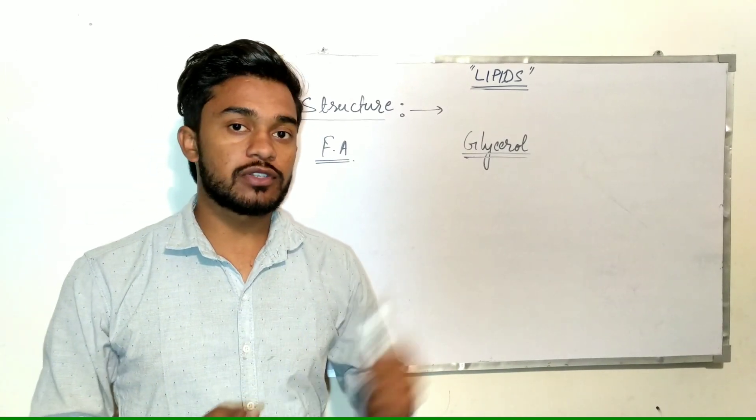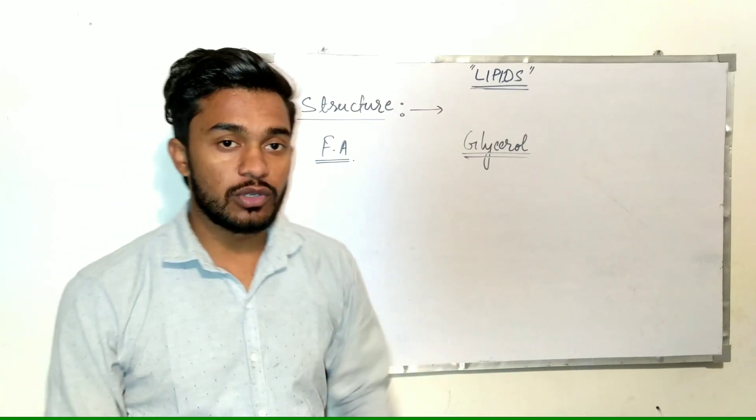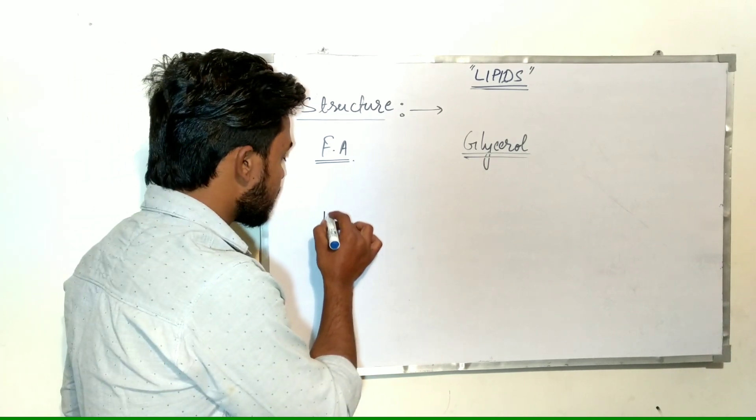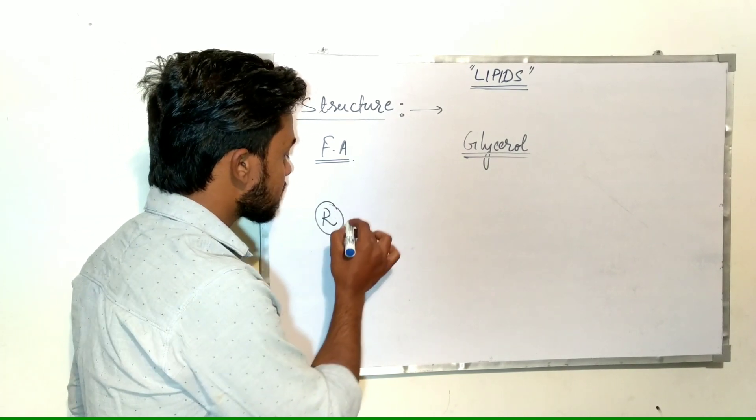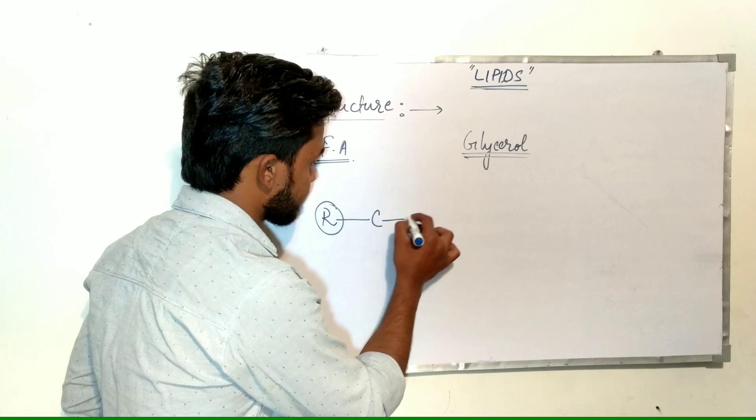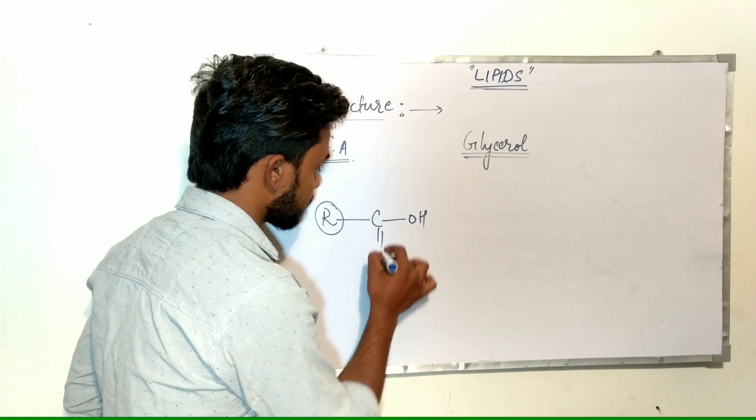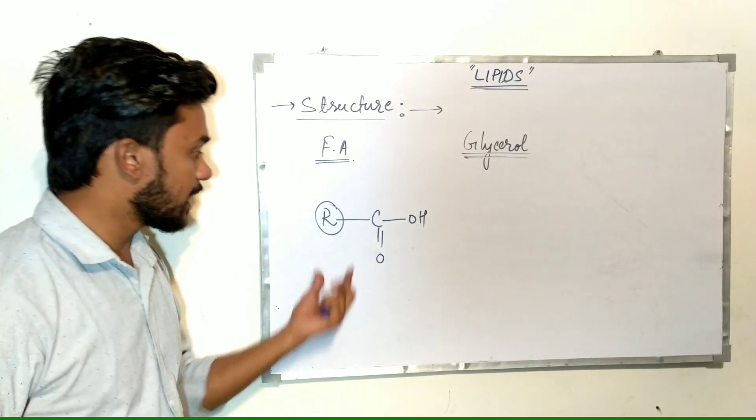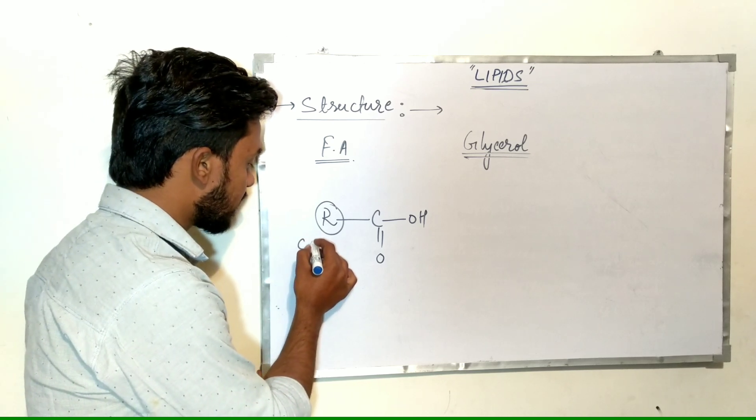We have two monomer units of lipids: fatty acid and glycerol. Fatty acid is a long chain of carbon that contains a carboxylic group at one end. The chain may contain 1 to 19 carbons in number.